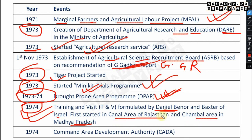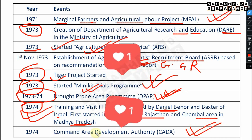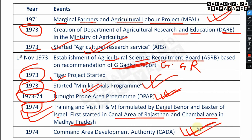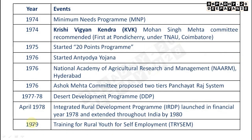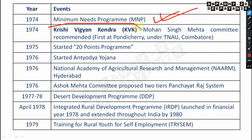The Command Area Development Authority (CADA) is very very important — established in 1974. Also in 1974, the Minimum Needs Program (MNP) was started — very very important.